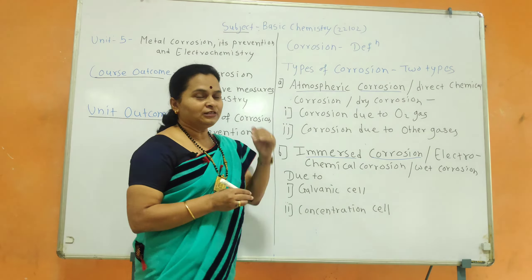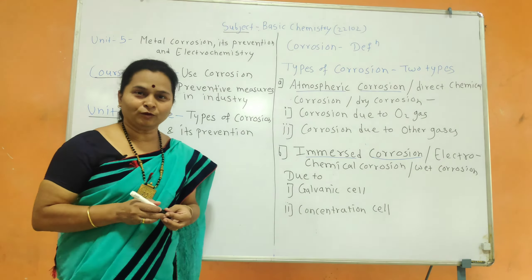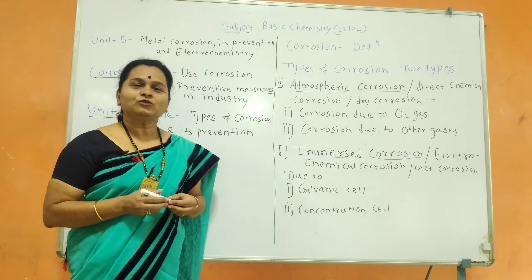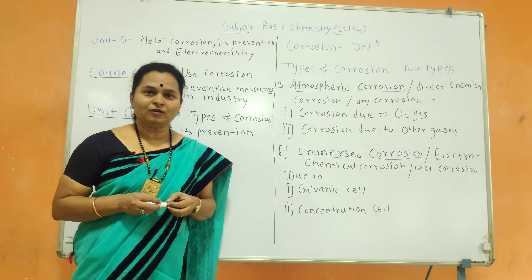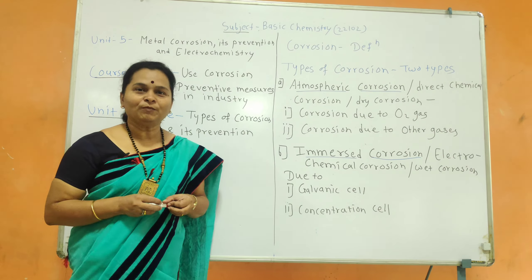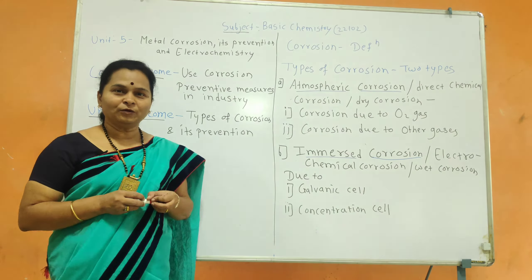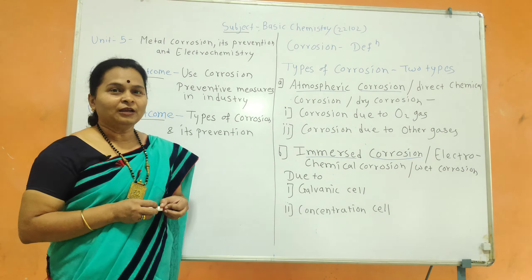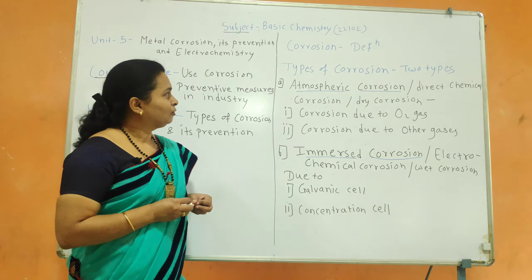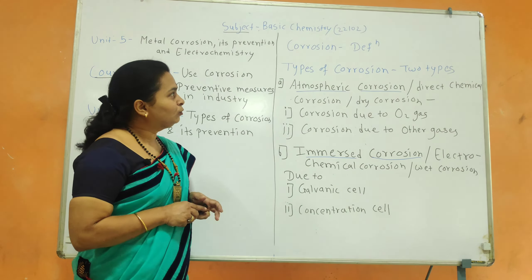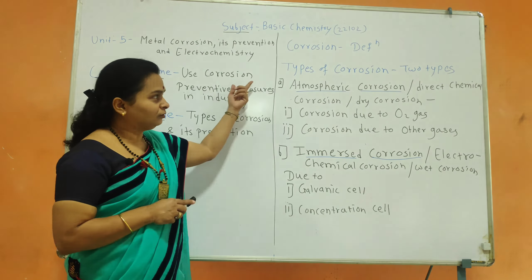The first topic is the definition of corrosion. Corrosion is the decay or destruction of metal due to the surrounding medium. There are two types of corrosion.